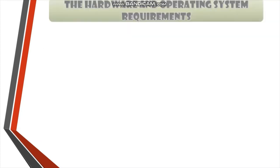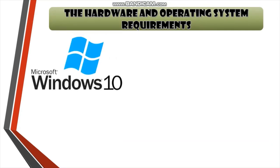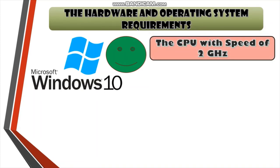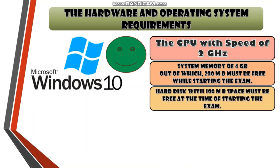Now let us look at the hardware and operating system requirements for running the examiner component on Microsoft Windows 10. Point 1: the CPU must have a speed of at least 2 GHz. CPUs with less than 2 GHz are not appropriate. Point 2: the system memory must be at least 4 GB, of which 200 MB must be free while starting the exam. Point 3: hard disk — as per Microsoft OS requirement, 100 MB of space must be free at the time of starting the exam.